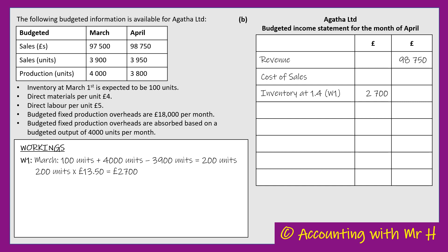I can put that £2,700 into my income statement. Next I need the cost of production. This business manufactures its own products, so I put production rather than purchases. In Working 2: the budgeted production for April is 3,800 units, and the budgeted cost per unit from Part A is £13.50. So 3,800 units times £13.50 gives a total production cost of £51,300.